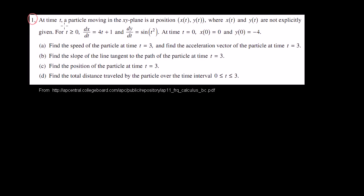Problem number one. At time t, a particle moving in the xy-plane is at position x of t, y of t, where x of t and y of t are not explicitly given. For t is greater than or equal to 0, the derivative of x with respect to t is 4t plus 1. The derivative of y with respect to t is sine of t squared. And at time t equals 0, x of 0 is 0, and y of 0 is negative 4.